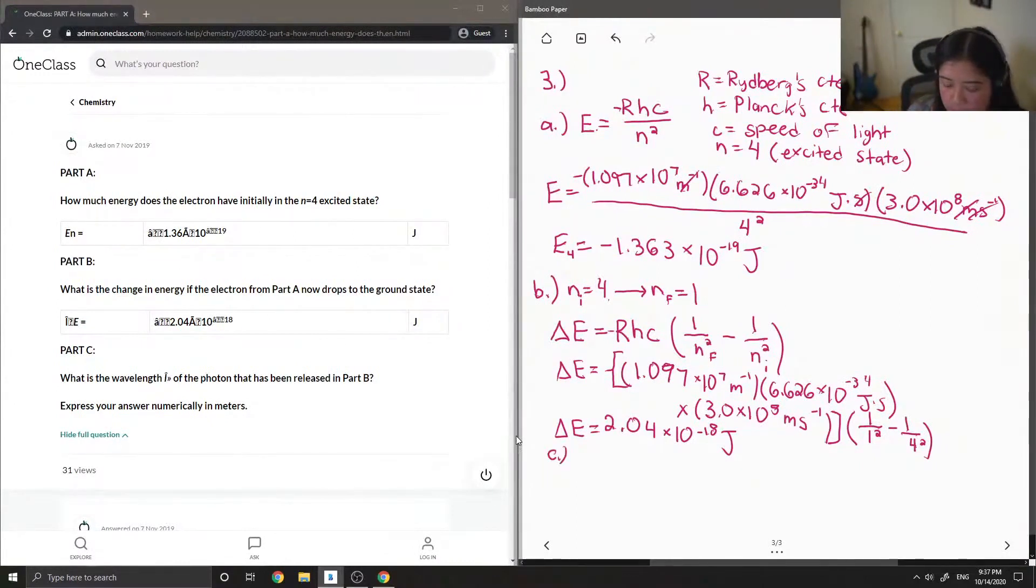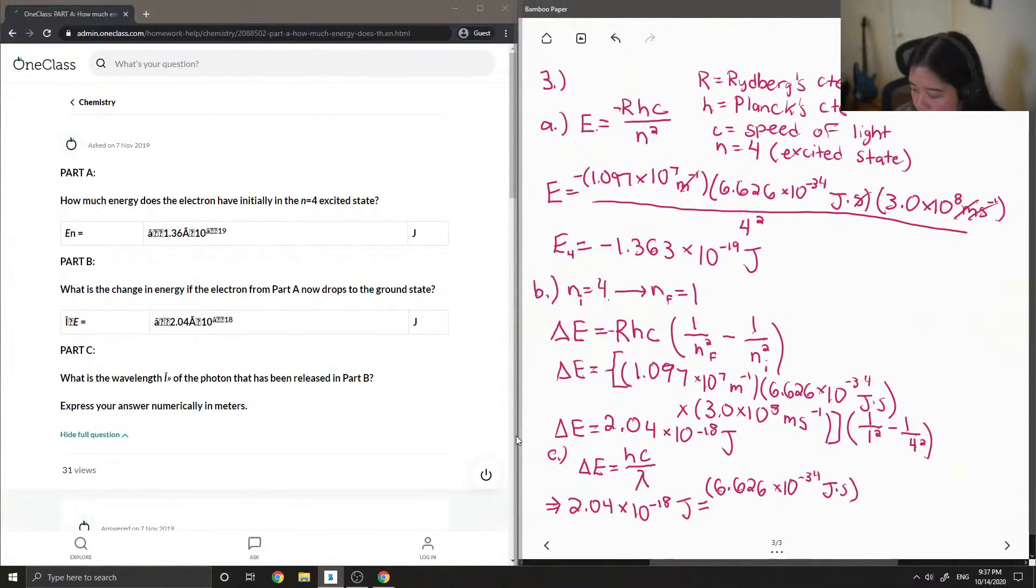Okay, so now we're on to C. What is the wavelength of the photon that has been released in part B? This is actually fairly easy as well. You have delta E, it's equal to hc over lambda. And then we just plug in everything that we know. So delta E is what we calculated above, 2.04 times 10 to the negative 18 Joules, is equal to Planck's constant, which is 6.626 times 10 to the negative 34 Joules times seconds. Speed of light, 3 times 10 to the 8 meters per second.